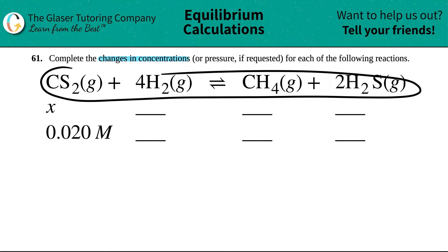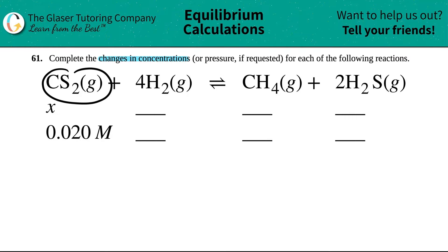So in this case, we have to find the change in concentration of CS2 gas plus 4H2 gas, which comes to equilibrium with CH4 gas and then 2H2S gas. We got to start with what we're given.